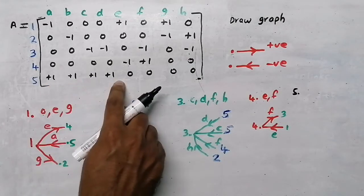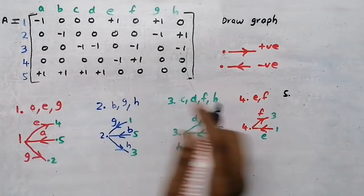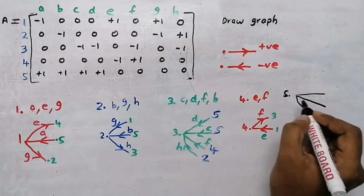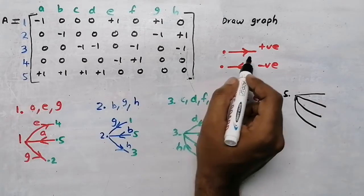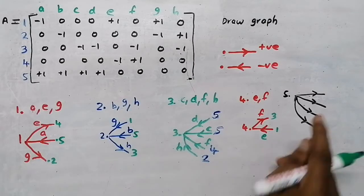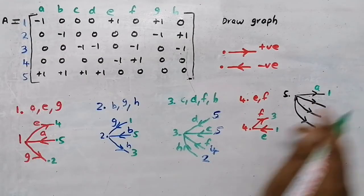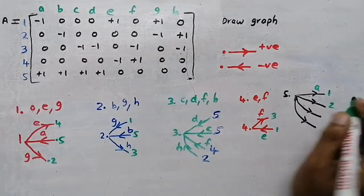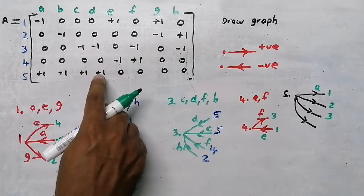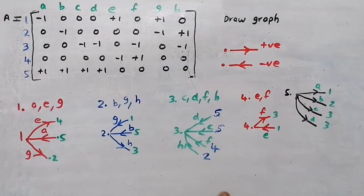The last node is 5. There are a lot of branches: a, b, c, and d - four branches. All are positive, meaning moving away. Now we need to find the end points. Branch a end point is at node 1. Branch b end point is at node 2. Branch c end point is at node 3. Branch d end point is also at node 3.